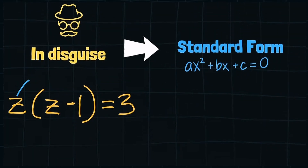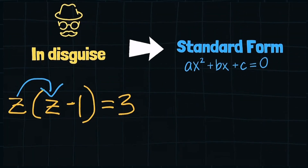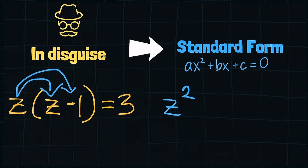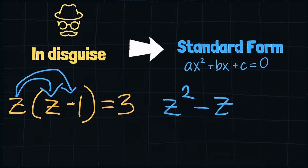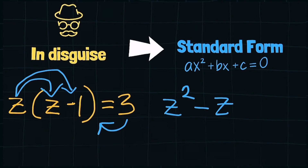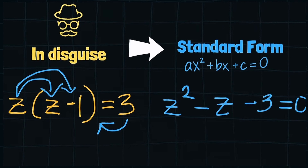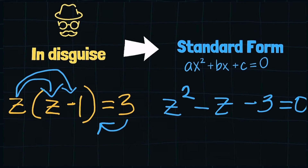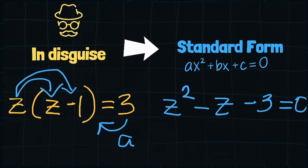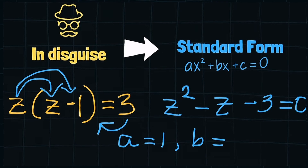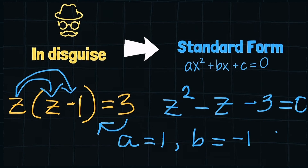Let's explore more. In disguise, we have this given. Can you help me transform it to standard form? Good job. We need to expand it and move 3 to the left. Therefore, the standard form would be z squared minus z minus 3 equals 0, where a is 1, b is negative 1, and c is negative 3.